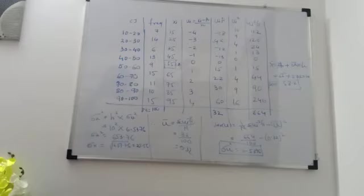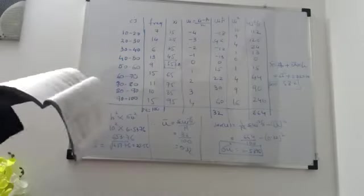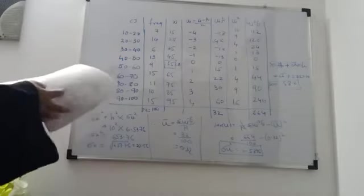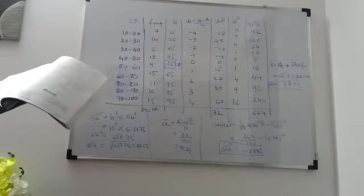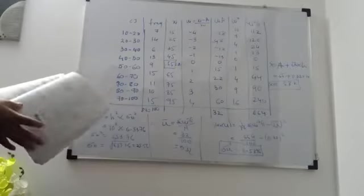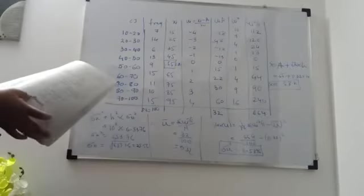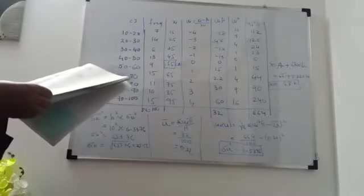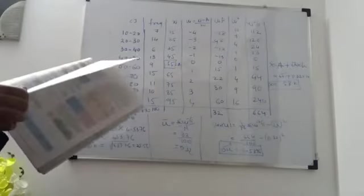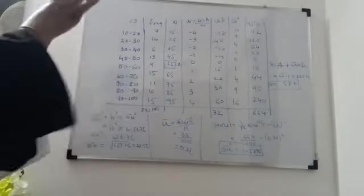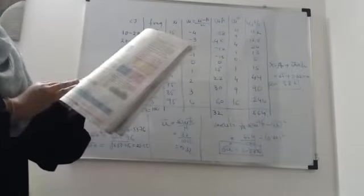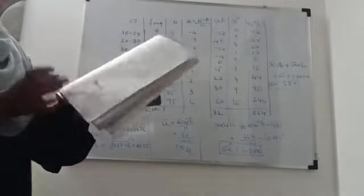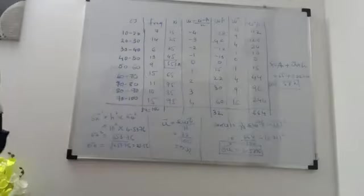Exercise 8.2, question number 7 is for your homework — just try to do it. Now we will see the formula for the standard deviation for combined data. Here we have only one data set; now we will see the formula when combining two data sets.